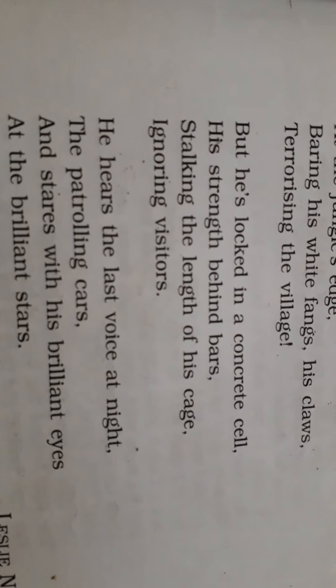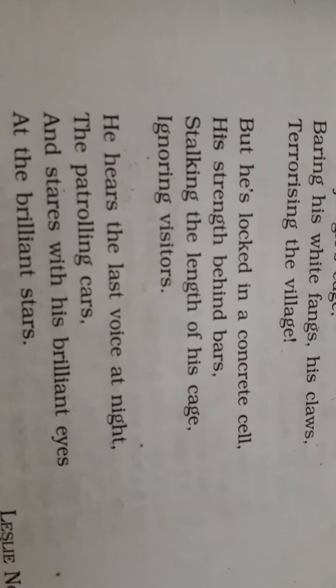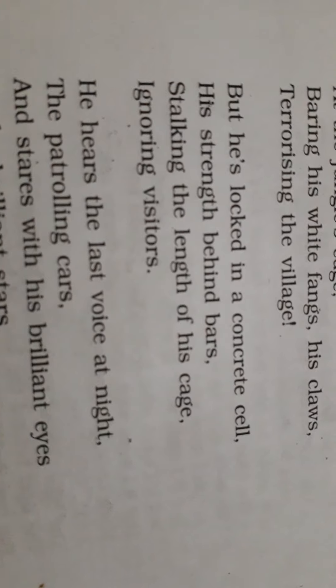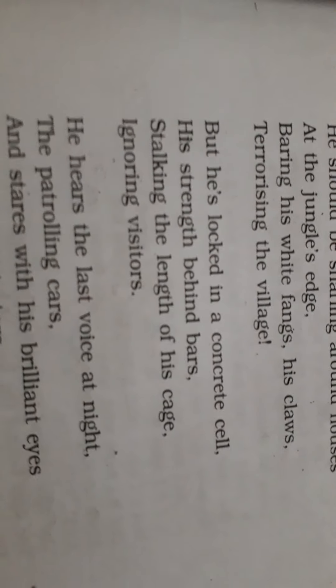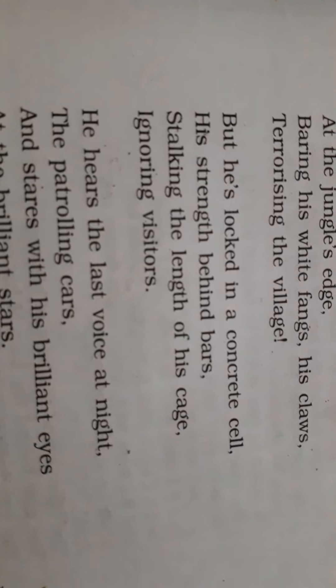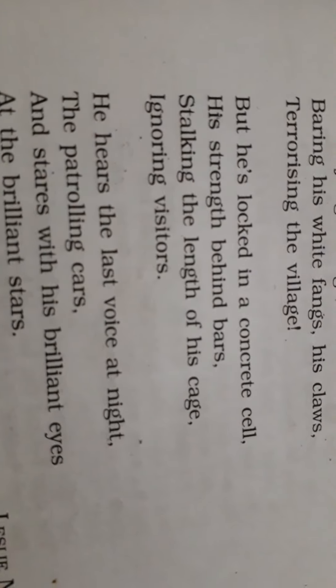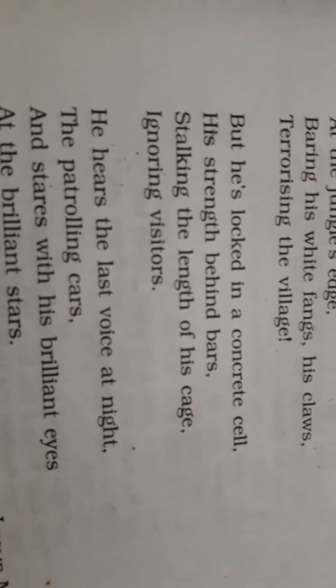The next question is: why is he locked? He is locked in a concrete cell so that he does not escape. The next question can be: explain 'stalking the length of his cage.' The explanation is: because the cage is very small, he cannot jump there, he cannot have a long walk. So he just takes a few steps of his cage and that is why he walks slowly.